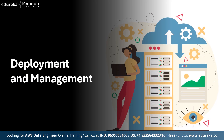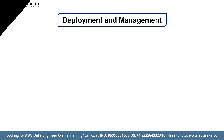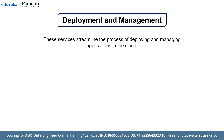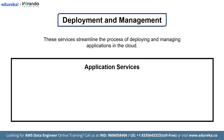Now let's dive into the deployment and management services that streamline the process of deploying and managing applications in the cloud. Let's begin with the application services, which provide essential tools for building and scaling applications effectively. First on the list we have Amazon SQS, which stands for Simple Queue Service. Amazon SQS is a fully managed message queuing service that enables decoupling and scaling of microservices, distributed systems and serverless applications. It allows you to transmit any volume of data without losing messages and without requiring other services to be always available.